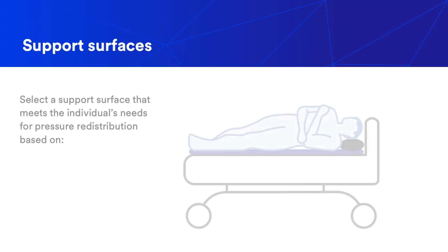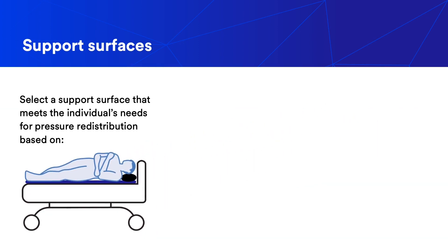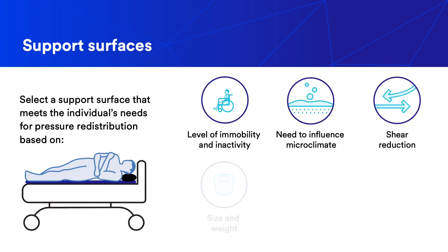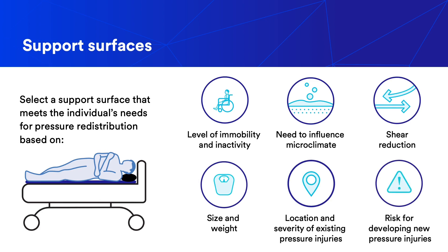Selection of a proper support surface can play a vital role in prevention, as they should meet the individual's needs for pressure redistribution based on level of immobility and inactivity, need to influence microclimate, shear reduction, patient size and weight, location and severity of existing pressure injuries, and risk for developing new pressure injuries.